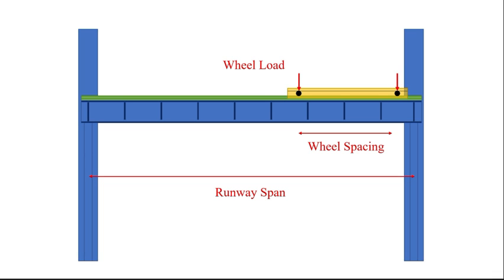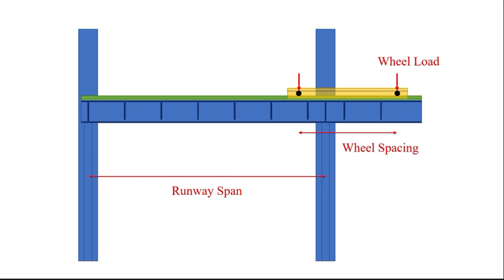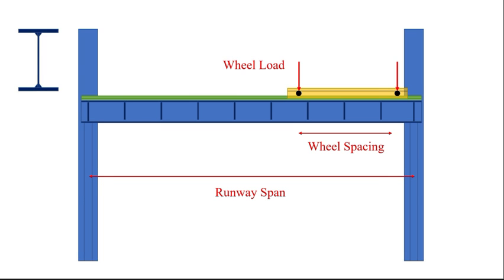The following summary for pre-selection of runway girders may prove helpful. For light cranes and short spans, use a wide flange beam. For medium cranes and moderate spans, use a wide flange beam and if required, reinforce the top flange with a channel or angles. For heavy cranes and longer spans, use a plate girder. The plate girder should be laterally supported by a horizontal truss or solid plate at the top flange.